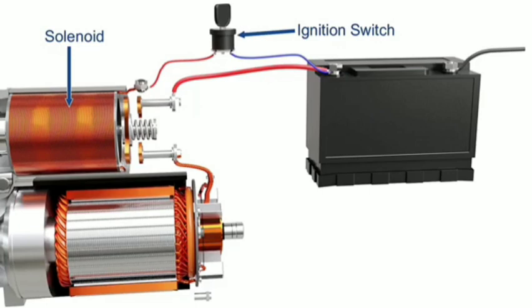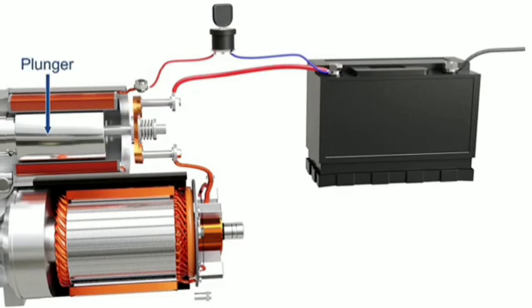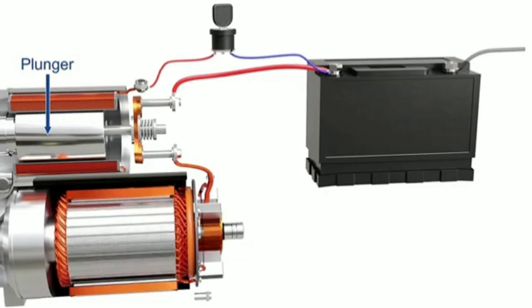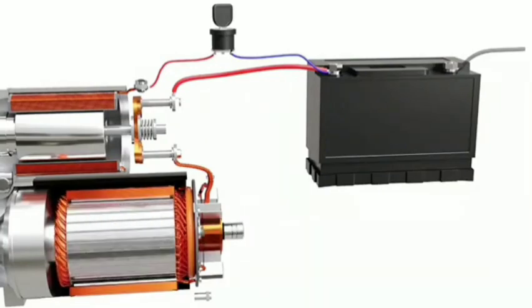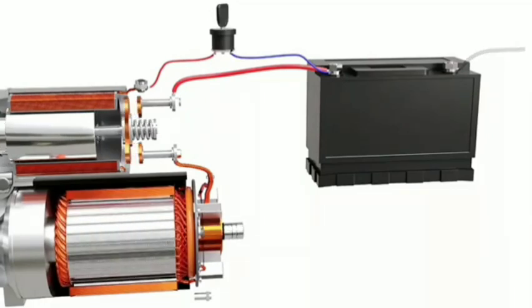The solenoid is an electromagnet which requires small current to get energized. As the ignition switch is turned on, the solenoid gets energized. A moving core known as a plunger slides along the coil, which connects two copper terminals of a contactor switch. This completes the circuit from the battery to the motor and causes the rotor to spin. When the solenoid is de-energized, the core returns back and disconnects the motor from the battery.